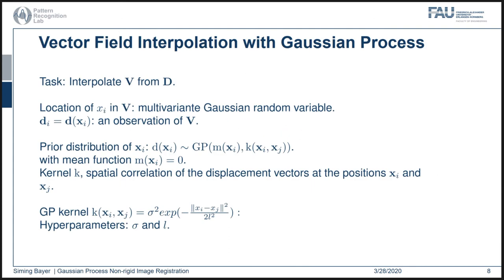In order to interpolate the dense field from the sparse one, we consider the location of each voxel in the dense field as a multivariate Gaussian random variable. Each vector of the sparse displacement field Di for the voxel at location Xi is treated as an observation of the dense field V. According to the definition of Gaussian process, the prior distribution of the spatial position Xi is given as the Gaussian process with mean function M and kernel K. The kernel K represents the spatial correlation of the displacement vector at positions Xi and Xj. In this work, we use a squared exponential kernel, and the characteristics of the squared exponential kernel are defined by L and sigma.